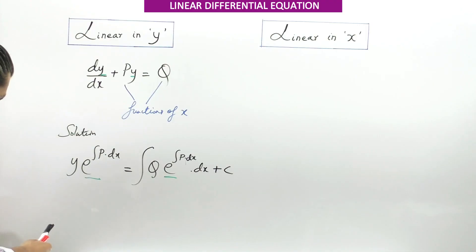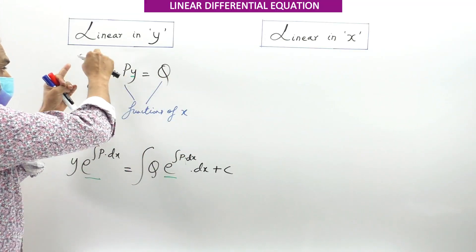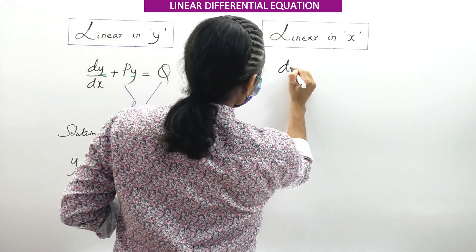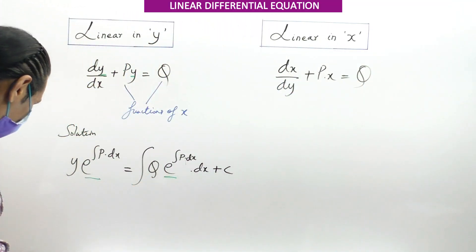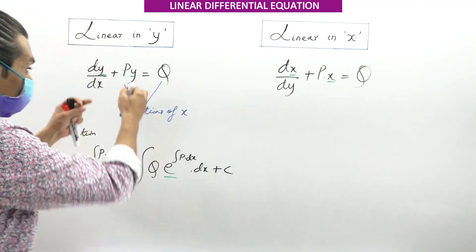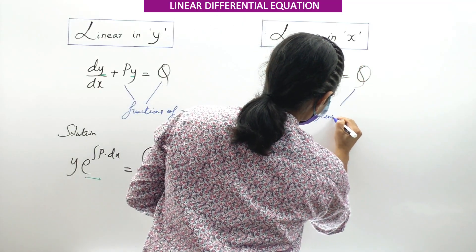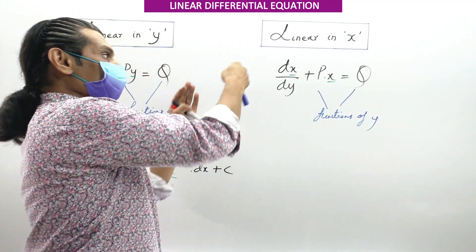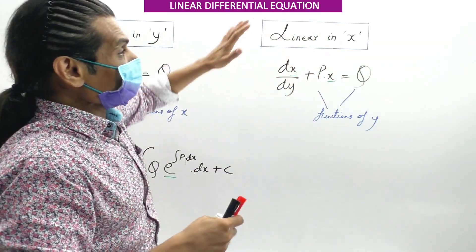Since we are done with Linear in Y, the next type is Linear in X. Similarly, Linear in Y has DY/DX + PY = Q, and Linear in X has DX/DY + PX = Q. Here P and Q are functions of Y, not X. The given equation can be converted into the form DX/DY + PX = Q, and then it is called Linear in X.